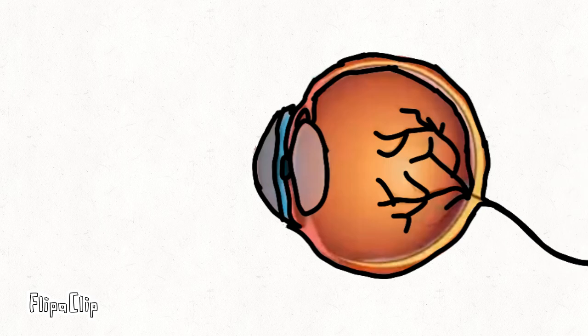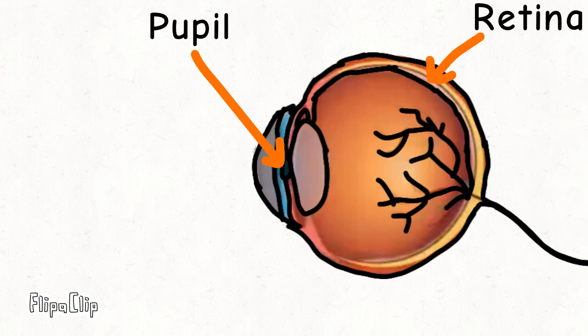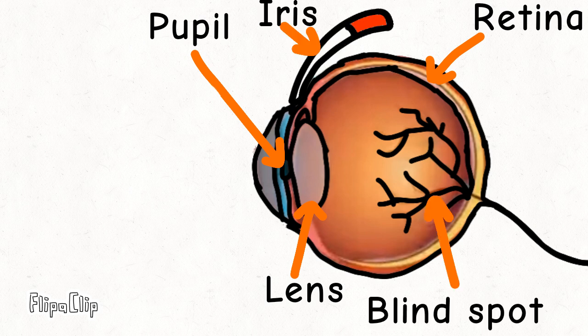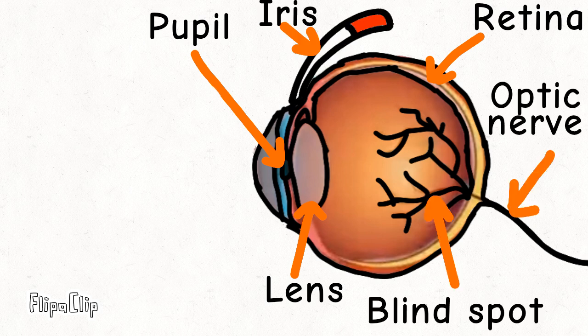Here are some parts of your eyes: the pupil, the retina, the lens, the iris, the blind spot, and the optic nerve.